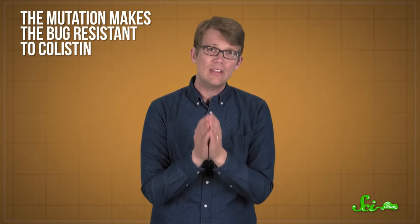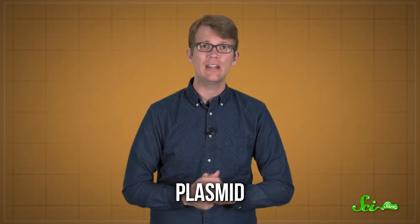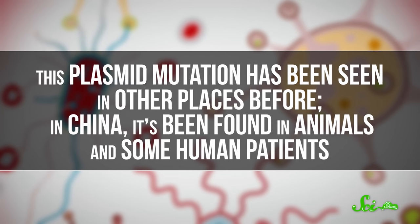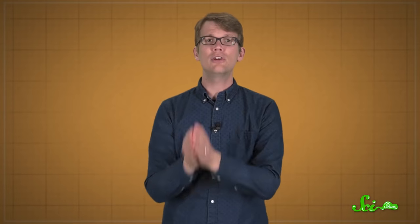And the thing that makes this mutation especially troubling is that it was found on a plasmid, a little piece of DNA that can be easily shared between neighboring bacteria, meaning it can spread more easily. This plasmid mutation has been seen in other places before, in China, in animals and some human patients. But this is the first time the plasmid has been found in the U.S., and it could get passed around very quickly.